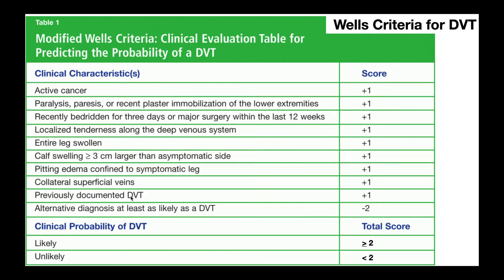Number nine is a previously documented DVT. If you've already had a DVT, it means you're susceptible to forming them, so that rules up the possibility of a current DVT. Each of criteria one through nine gives the patient one additional point. However, the last criterion — alternative diagnosis at least as likely as DVT — gives a score of minus two, which helps to rule down a DVT. If there's another diagnosis that explains the patient's issues, it reduces the likelihood of a DVT, so this one receives a score of negative two.